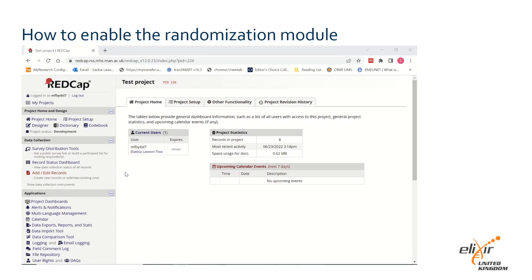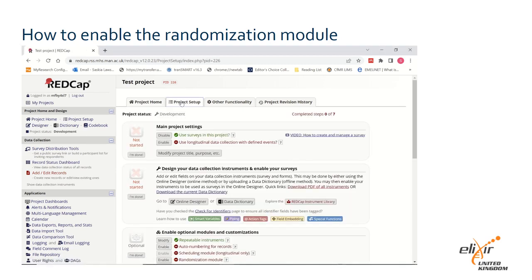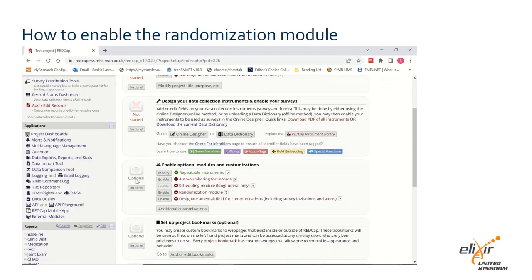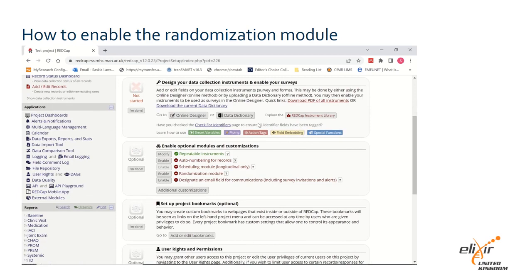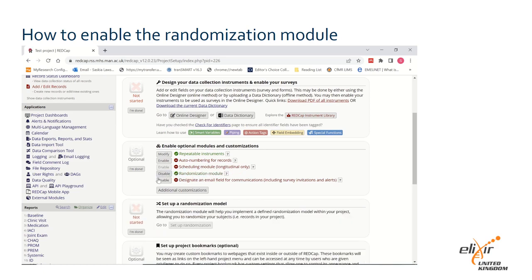Go to your project homepage and click on project setup. Scroll down to the enable optional modules and customisations box. There should be a line called randomisation module. Click enable next to this option.